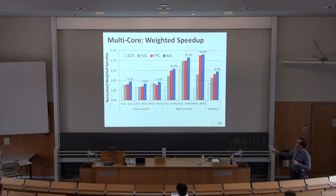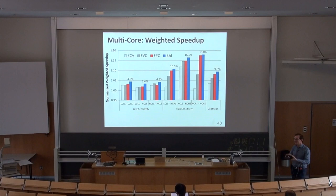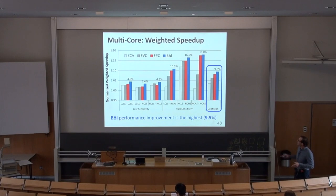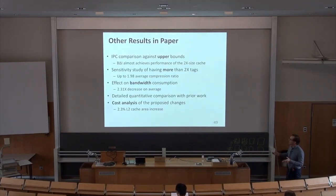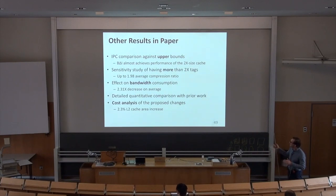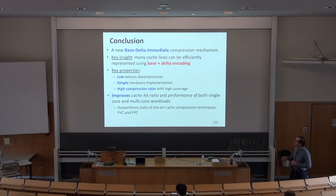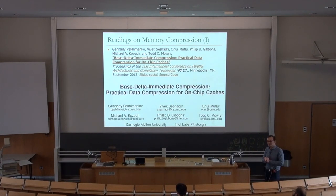Doing this categorization gives insight into where gains come from — you can prove you don't get much benefit in low-sensitivity cases and show large gains in high-sensitivity cases. There are also other benefits not evaluated in the paper, such as significant reduction in bandwidth consumption and therefore power consumption. Compression also has an interesting downside: it increases entropy in transmitted data, so interconnect wires switch more, potentially increasing energy — especially in GPUs.